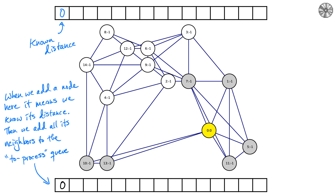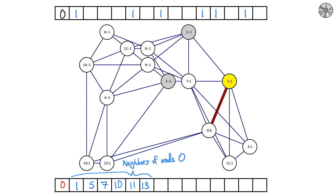The next step is to look at all the neighbors of the node we're evaluating in the queue. The node in the queue is node zero. Its neighbors are 1, 5, 7, 11, 10, and 13 — all the gray nodes. We put all of them into our queue. Since node zero has distance zero, all of these must be at distance one. So in indices 1, 5, 7, 10, 11, and 13 we place ones, because now we know the distance to all those nodes from node zero.